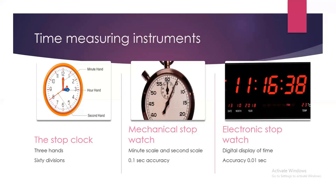The third one is the electronic stopwatch. It has a digital display of time and its accuracy is 0.01 second. It gives hours, minutes and seconds, providing time to 0.01 second accuracy — meaning it gives the time with higher accuracy. The figures will help you to understand how to read the time with these watches.